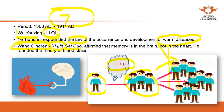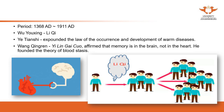In this book, Dr. Wang Qingren affirmed that memory is in the brain, not in the heart. Traditionally, the mind, memory, and thoughts were considered to reside in the heart. That's why even today, treatment for memory problems focuses on the heart. Dr. Wang also founded the theory of blood stasis. During this period, because of the influence of Western medicine, Chinese medicine practitioners tried to integrate the two systems.